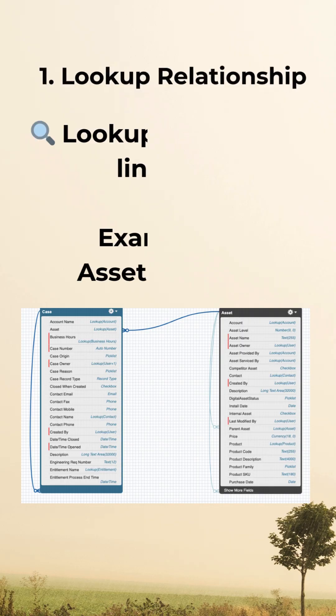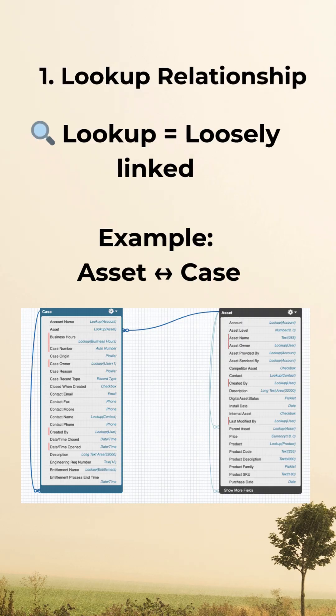The first one is the lookup relationship. It's a loose connection, which means when a parent is deleted the child still remains. Think of one asset linked to multiple cases — even if the case is deleted, the asset still remains.